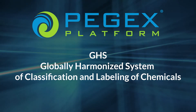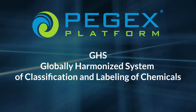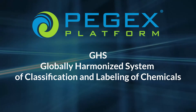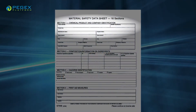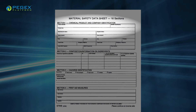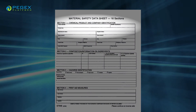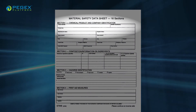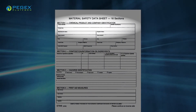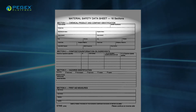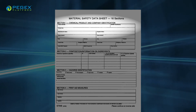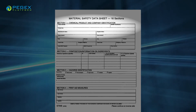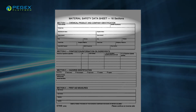Safety Data Sheets follow a standardized 16-section format. Section 1 is Identification, which includes the product identifier, manufacturer or distributor name, address, phone number, emergency phone number, recommended use, and restrictions on use.